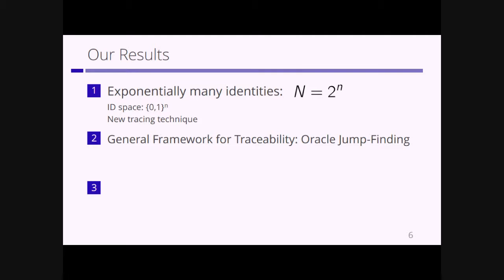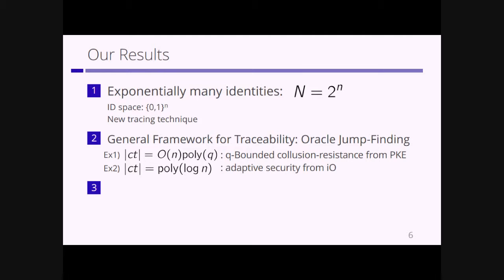We also propose a general framework for traceability, which we call the oracle jump-finding problem. Using this general framework, we can obtain various traitor tracing schemes from various assumptions. For example, using a standard public-key encryption scheme we can achieve adaptive security — meaning unbounded collusion — and the ciphertext size is polynomial in log of small n, so our construction is asymptotically very efficient.